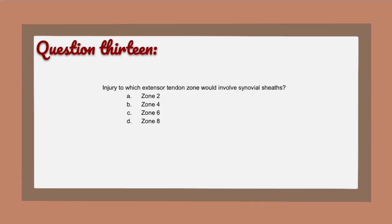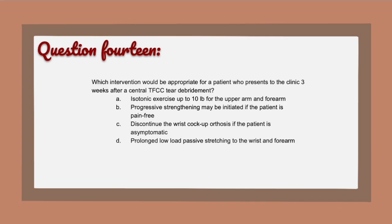Question 13: The correct answer is D — Zone 8. Zone 8 involves the synovial sheaths. Go ahead and look back at the anatomy and make sure you are familiar with all of the extensor tendon zones and the components of each zone.